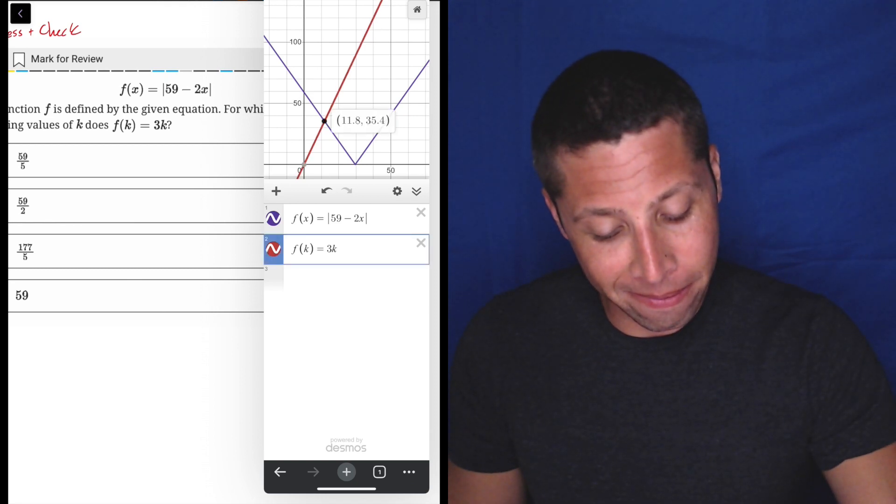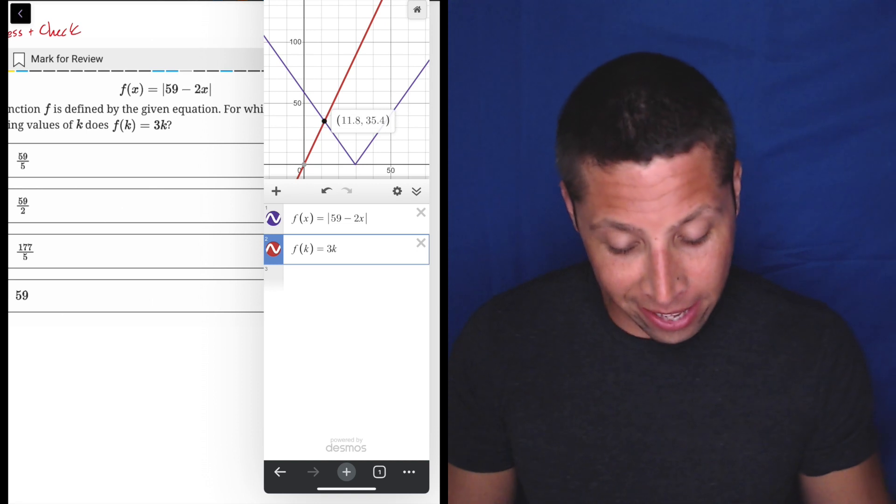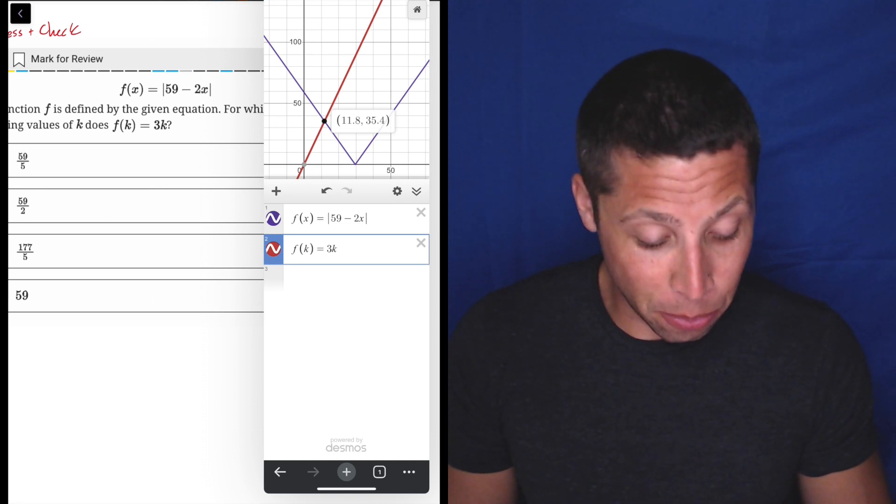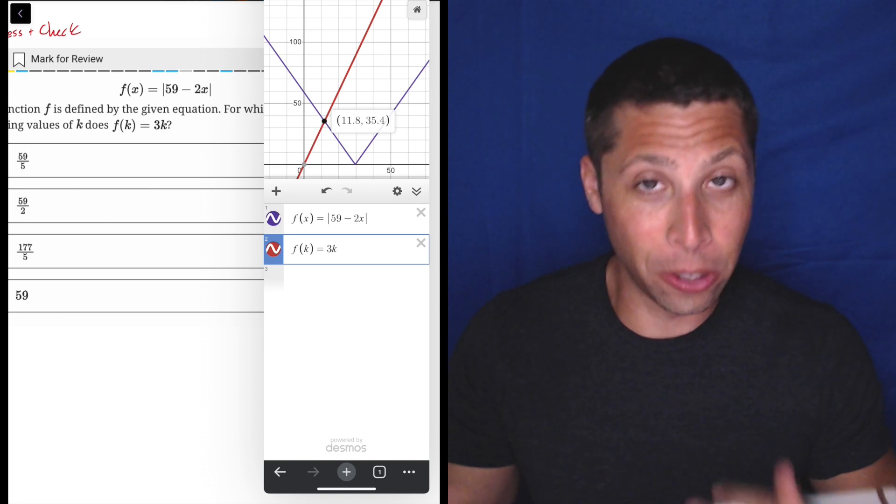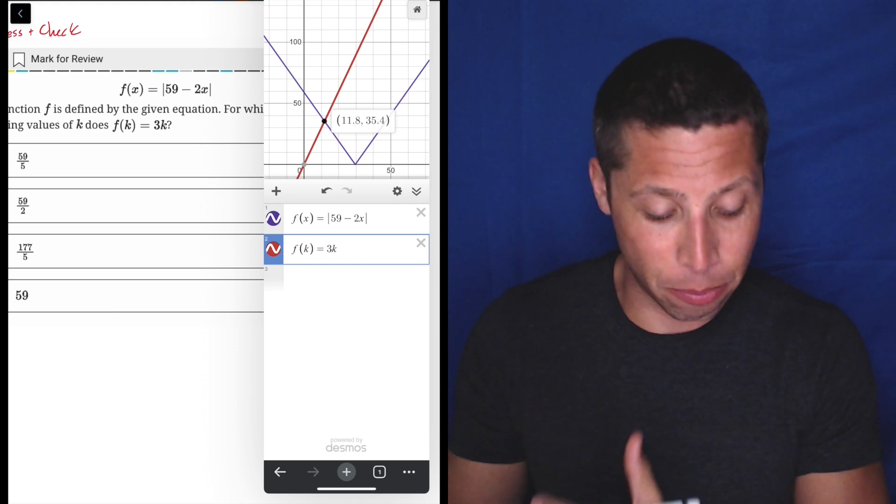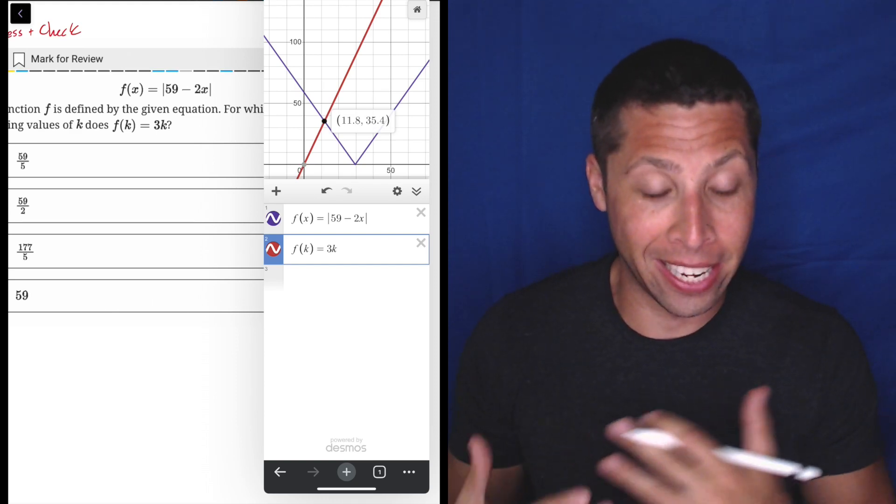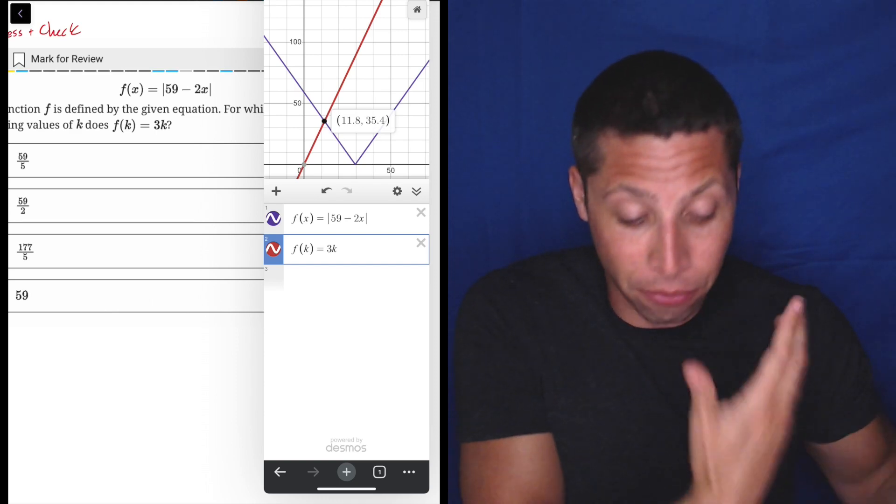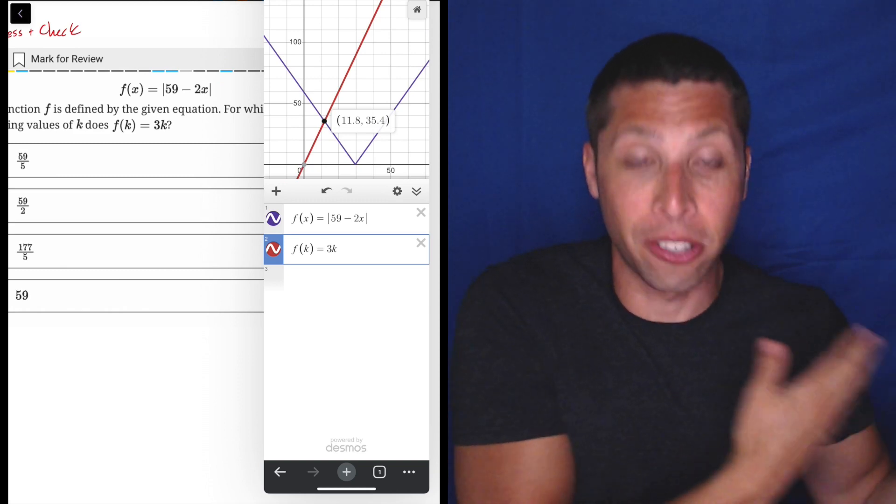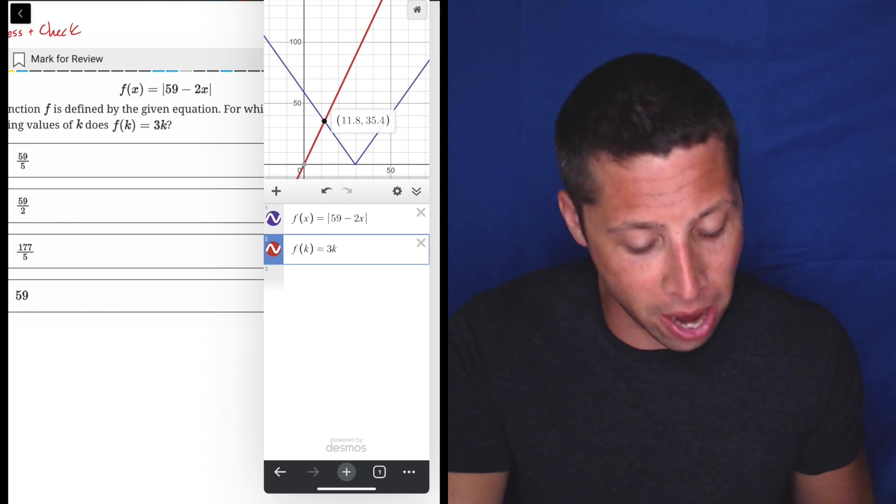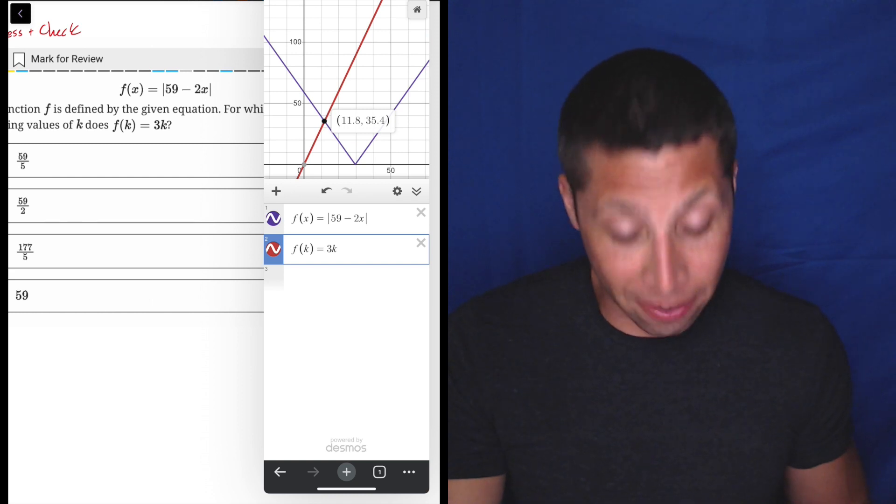And there's an intersection. And if we tap the intersection point, the value is 11.8, 35.4. And you kind of see, okay, well, the X is the 11.8 or the K is the 11.8. And then three times that, roughly three times 11 is 33. So we're getting kind of the 35.4 there. So what is 11.8?